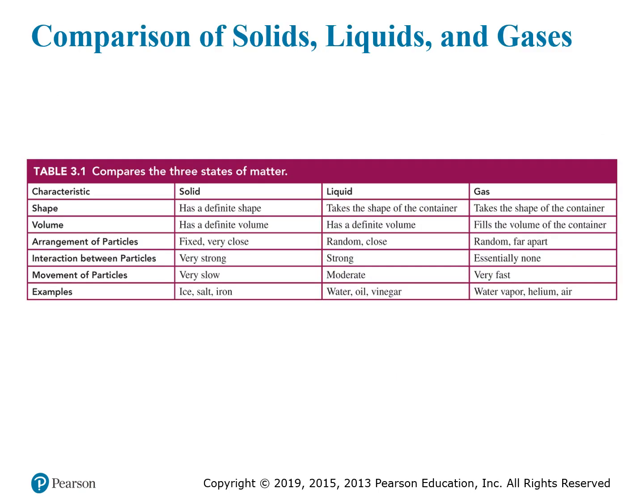Here we see a chart that summarizes some of these properties of solids, liquids, and gases. It covers shape, volume, the arrangements of the particles — whether they're fixed and close together, close together and mobile, or very far apart and moving very quickly — as well as interactions, movement, and some examples.